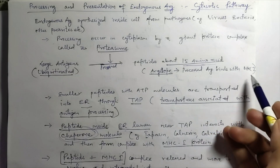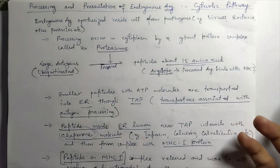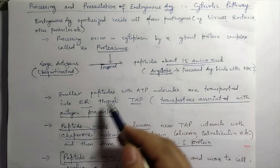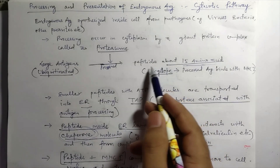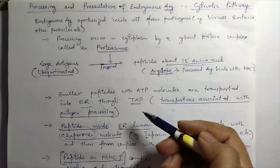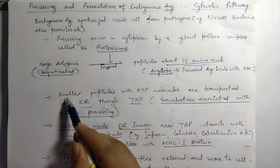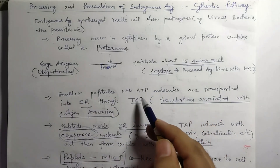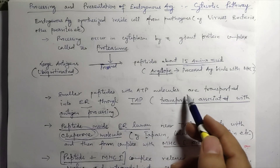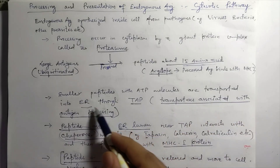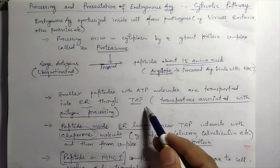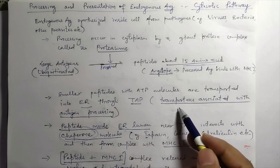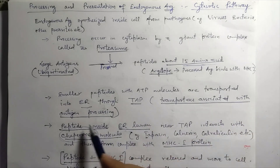Among these peptides there is a processed antigen component also called the agretope, which is supposed to bind with MHC molecules during its subsequent expression on the cell surface. These smaller peptides are further processed by cytosolic enzymes into further smaller subunits, and these smaller peptides, along with ATP molecules, are transported into the ER lumen through a transporter called TAP — Transporters Associated with Antigen Processing.